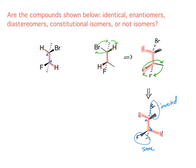That means we have a pair of non-superimposable, non-mirror images, which gives us a pair of diastereomers. If they were enantiomers, both chiral centers would have had to be inverted.